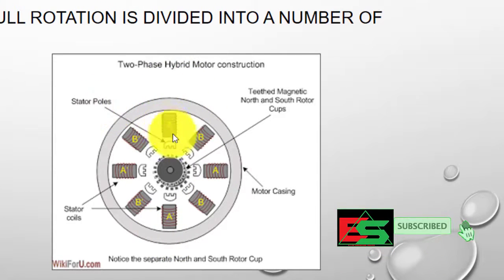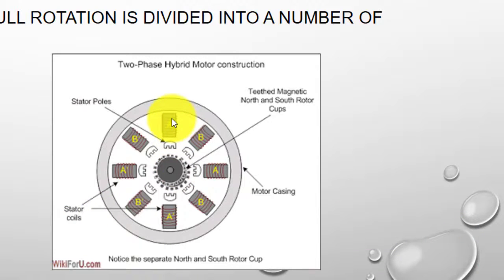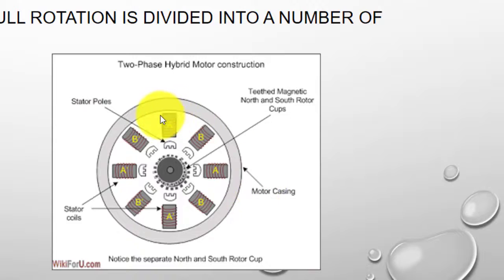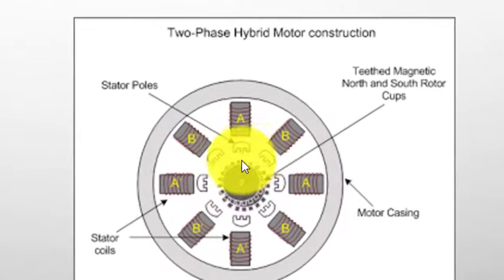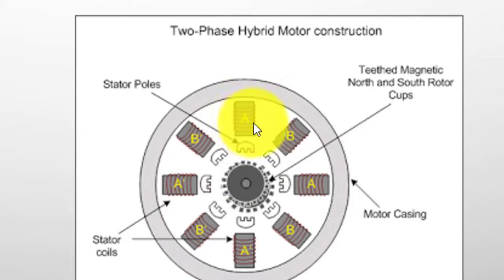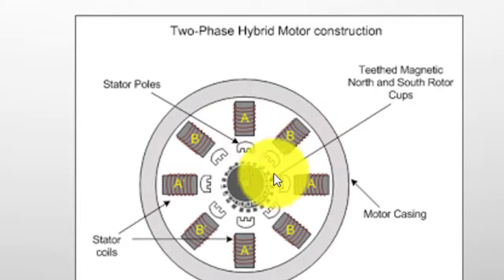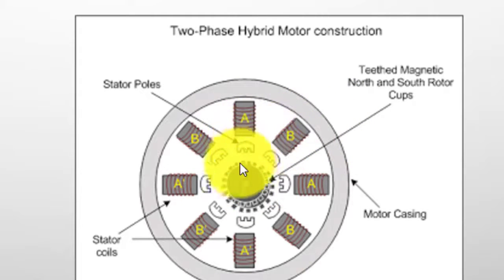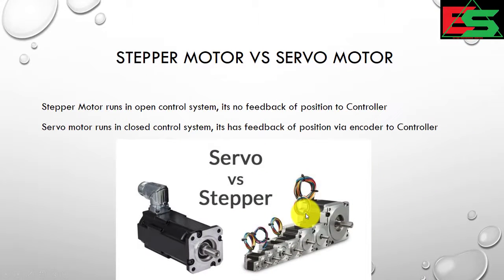You can see here there are different stator poles and stator coils: A, A, B, B, A-dash, B-dash. This is the motor casing, and this is the magnetic north and south rotor cup. When current passes through this stator coil, it will generate a magnetic field. When coil B also passes current, it generates a magnetic field. This way the motor will move in steps.